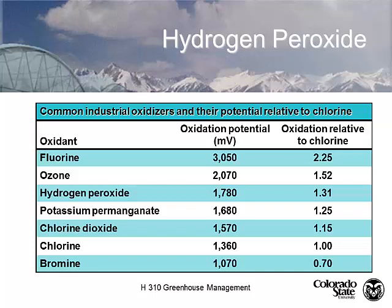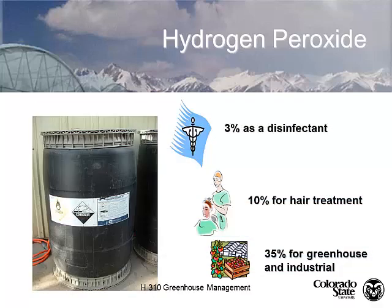Hydrogen peroxide is another chemical coming online. You can buy it at Walgreens as a disinfectant — the bubbling you see is the oxidation reduction process happening. At 10% it bleaches hair; at 35% it's industrial grade. At 35% and higher, hydrogen peroxide is highly explosive and is the oxygen source for rocket fuel. If you drizzle 35% hydrogen peroxide onto dried wood, it catches fire.